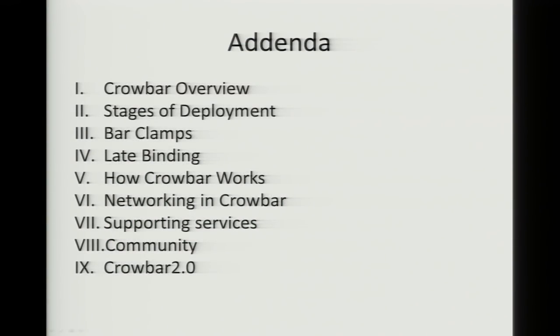We'll talk about a couple of concepts inside of Crowbar, particularly bar clamps — which are the modules inside of the product that you can modify, add, or remove depending on what you want to do — the concept of late binding, the workflow on how Crowbar instantiates the systems, networking, supporting services, and finally Crowbar 2.0, which is a refactor we're working on. We'll talk about features in that and call for help if anybody wants to help out with the project.